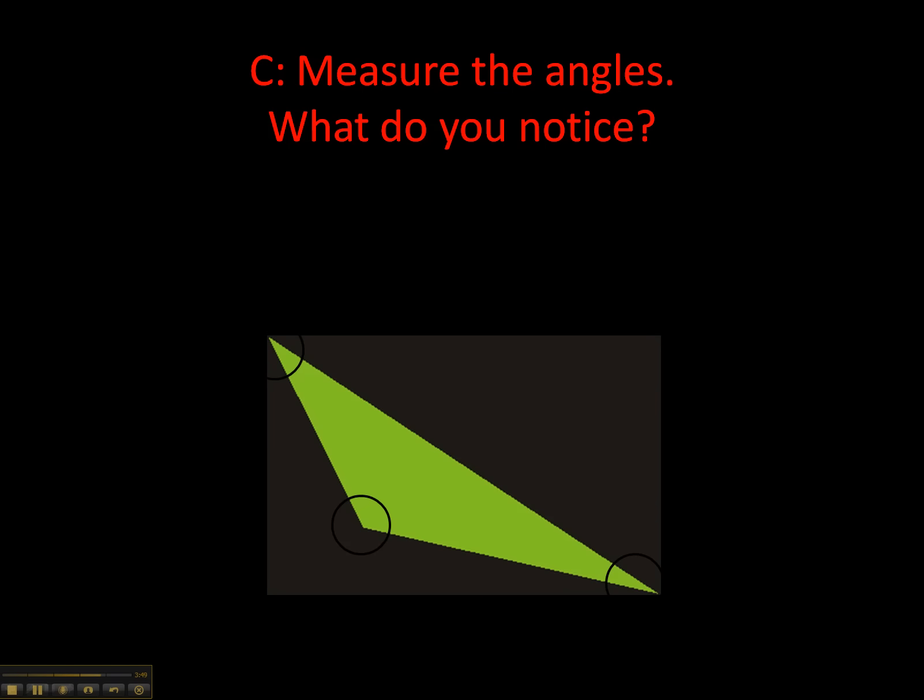Question C says, repeat parts A and B using a triangle with an obtuse angle. So here's my obtuse. This triangle here has an angle that is over 90 degrees on it. Now that's going to affect the size of the other two angles. You'll see they're a little smaller here. But that's an obtuse angle. So what would we find if we did that?